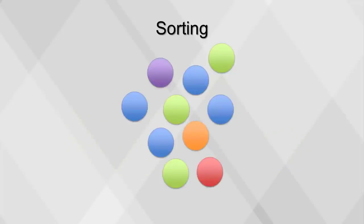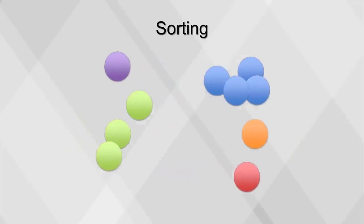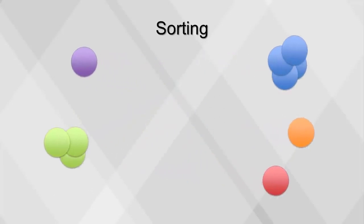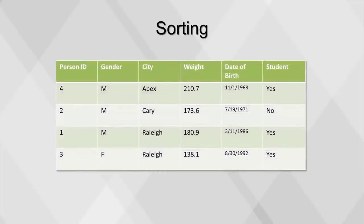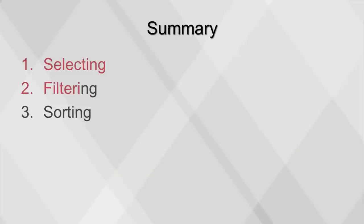The next step is sorting. When we sort, we rearrange a table by ordering the rows according to the values of one or more fields in either ascending or descending order. Here's our original dataset sorted by date of birth in ascending order. Here we've sorted by city in ascending order and then by weight in descending order. This concludes our video on selecting, filtering, and sorting.